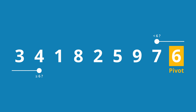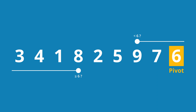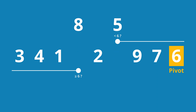We search from the left for the next element greater than or equal to 6. 1 is not greater, 8 is greater than 6. And from the right, the next element less than 6. The 9 is not smaller, the 5 is smaller. So we swap the 8 and the 5.